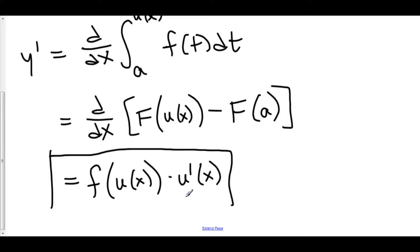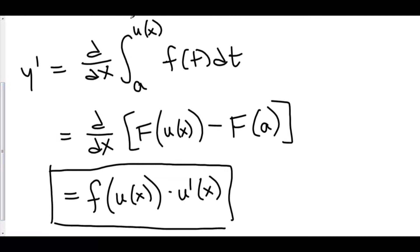So when we use some function of x, some stuff in our upper limit, we have to use chain rule. We plug u(x) into our function and multiply by the derivative of u.